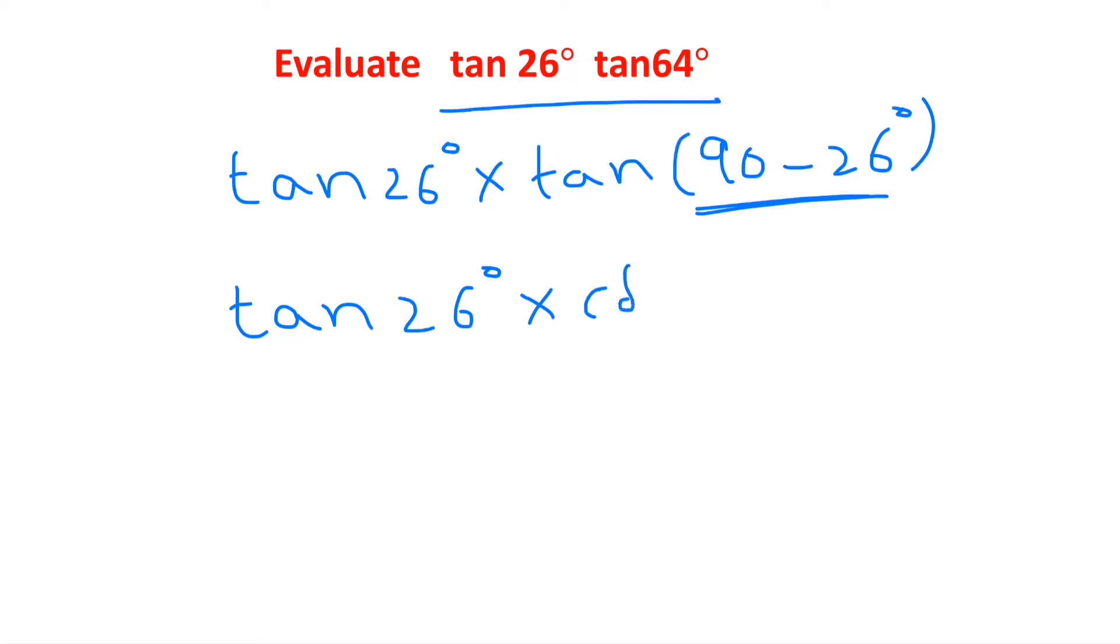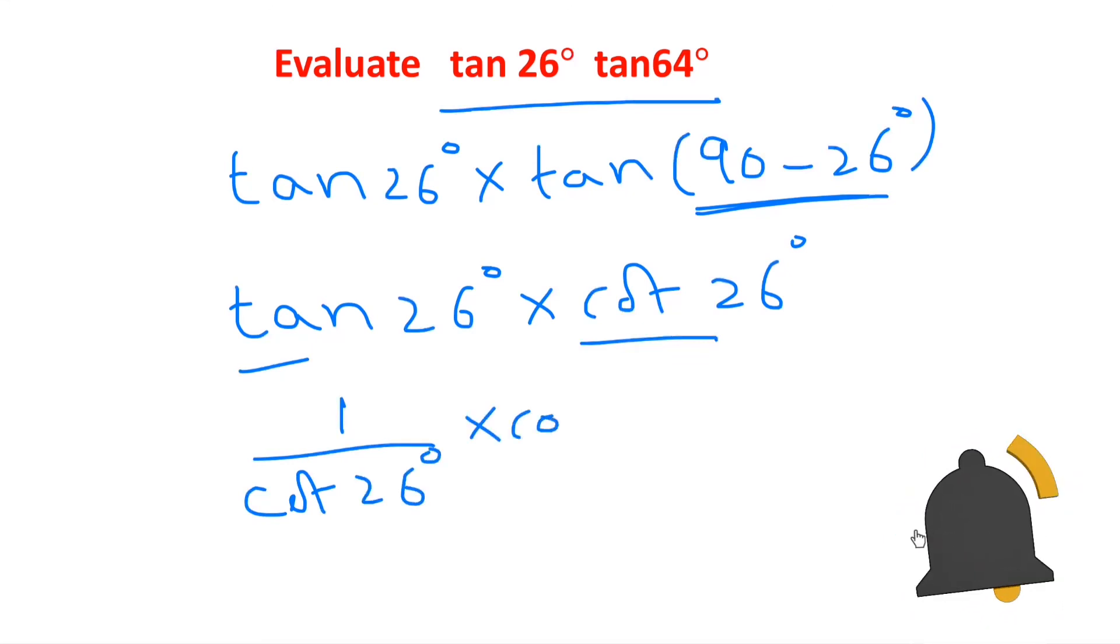Now cot and tan are multiplicative inverse of each other, so tan we can write as 1 by cot 26 degrees times cot 26 degrees. These two will get cancelled and the result is 1.